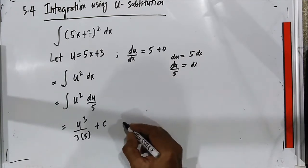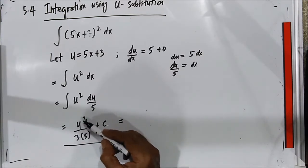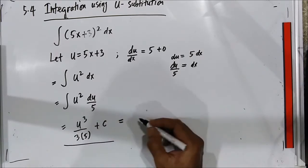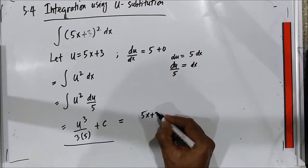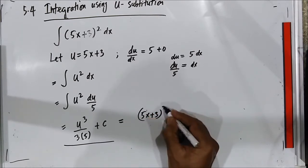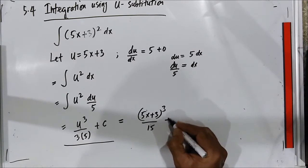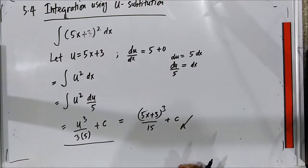Then this can be written by substituting u equal to 5x plus 3 back into the answer, giving us (5x + 3)³ over 15 plus C. This is your final answer for the method of integration using U-substitution.